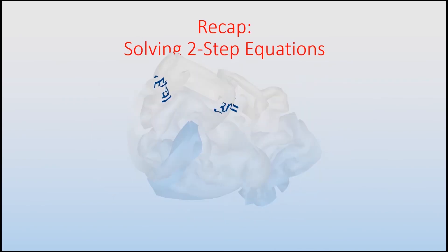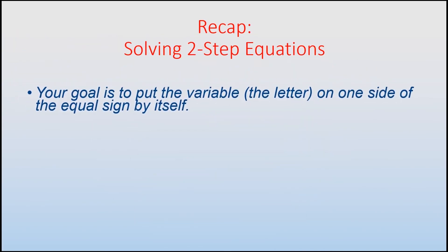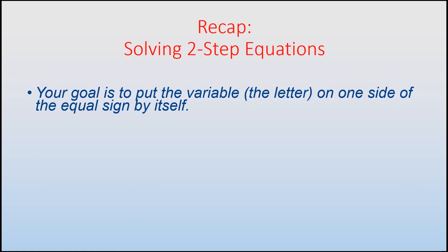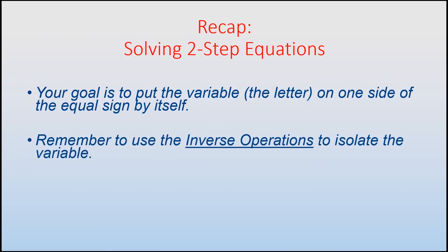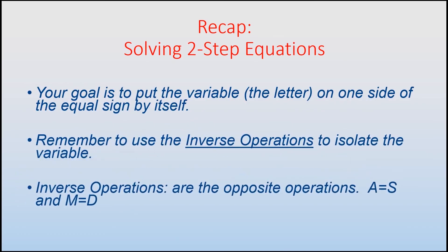Let's take a recap of how to solve two-step equations. In solving two-step equations, you want to remember that your goal is to put the variable on one side of the equal sign by itself. You want to remember to use the inverse operations to isolate the variables. And inverse operations are just literally the opposite operations. The opposite of addition is subtraction and vice versa, and the opposite of multiplication is division.